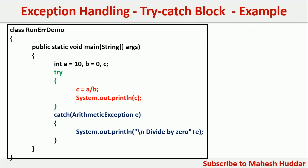This is the example we considered in the previous video. In this case, there are two sets of statements which may generate or behave unusually. For example, c is equal to a divided by b. If the value of b is equal to 0, it will generate an arithmetic exception. Because of that, we have put these particular statements into a try block and there is an associated catch block. Whenever there is an exception, this catch block will be executed and it will give a proper message to the user saying this is the problem and you have to handle it properly.